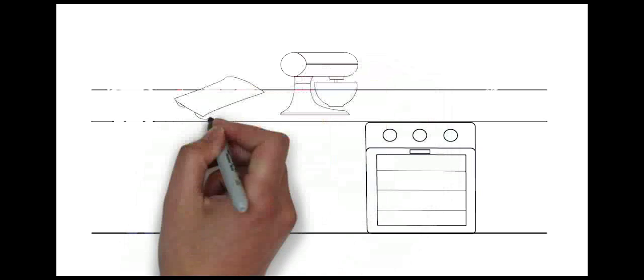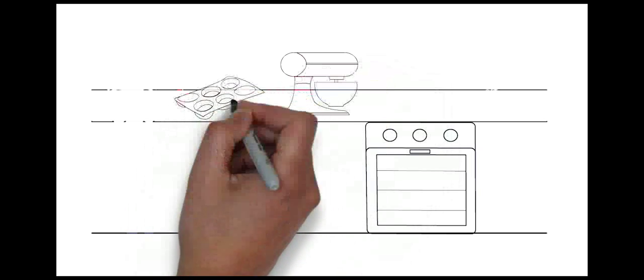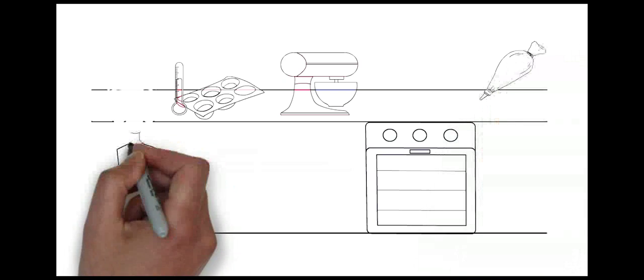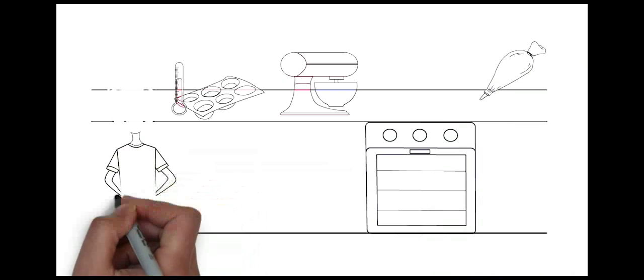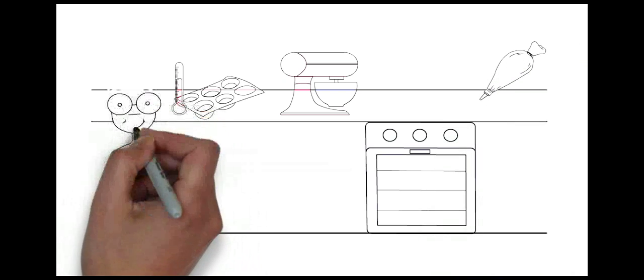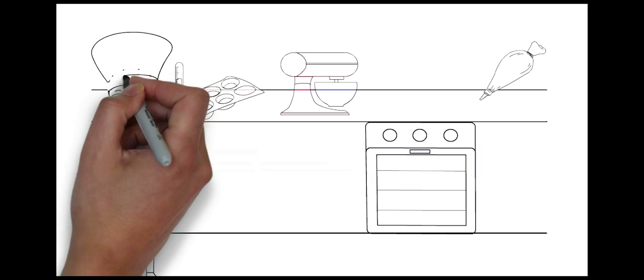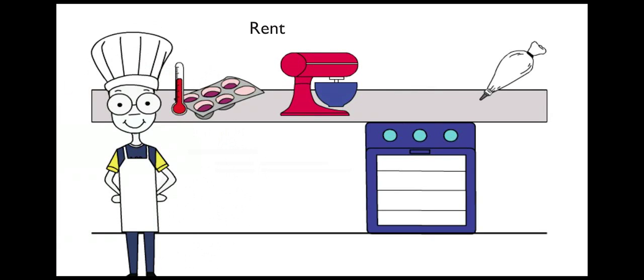Through observation of the production process, Bob identifies four key activities that all his products go through. He wants to understand what resources are used by each activity and how much this costs the bakery. Bob looks at his overhead costs and assigns them to each activity depending on how much of a resource each activity consumes.